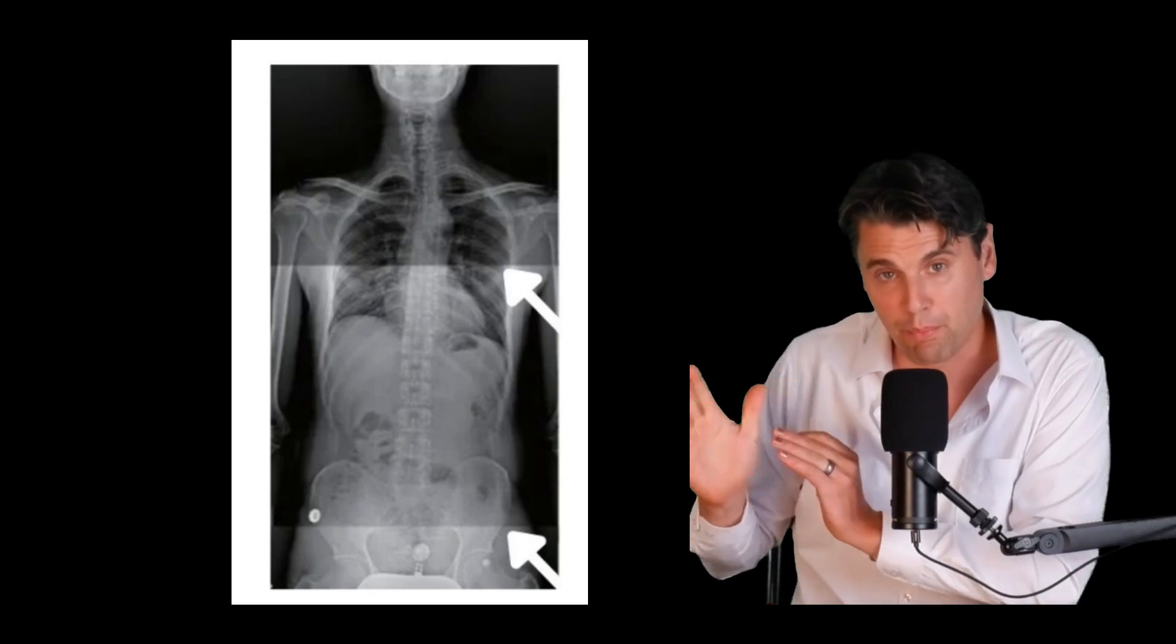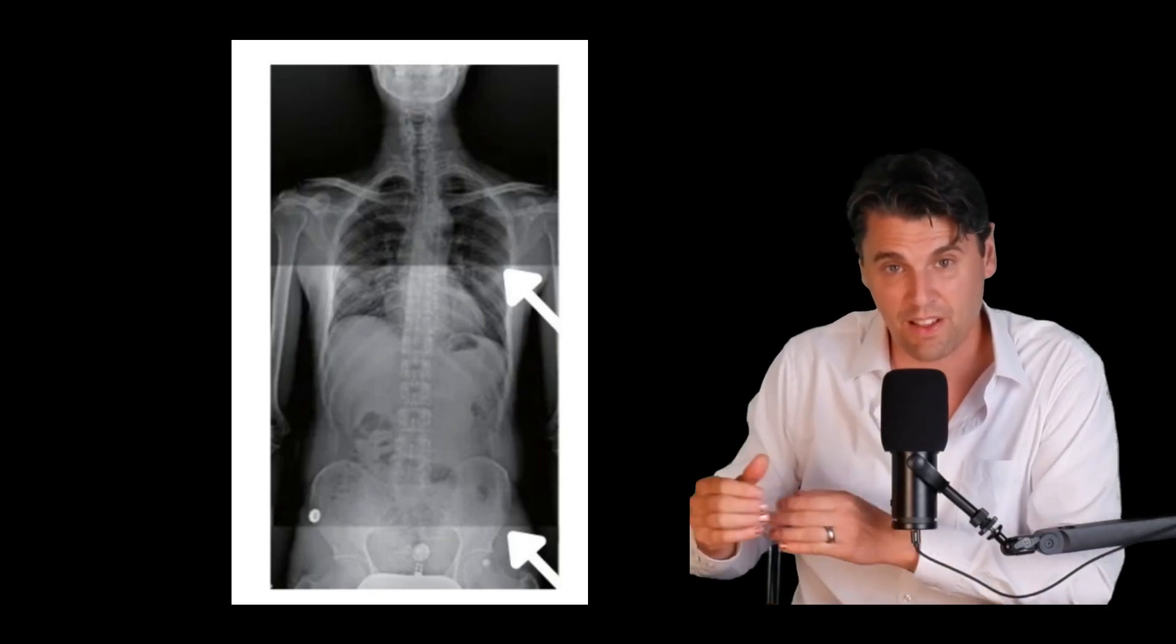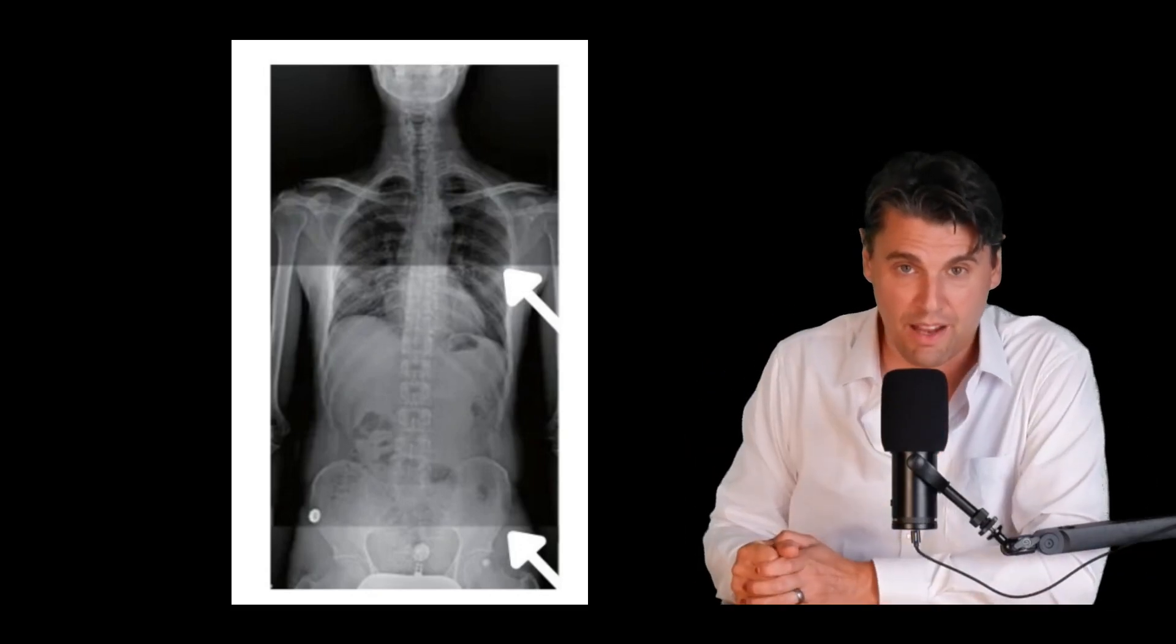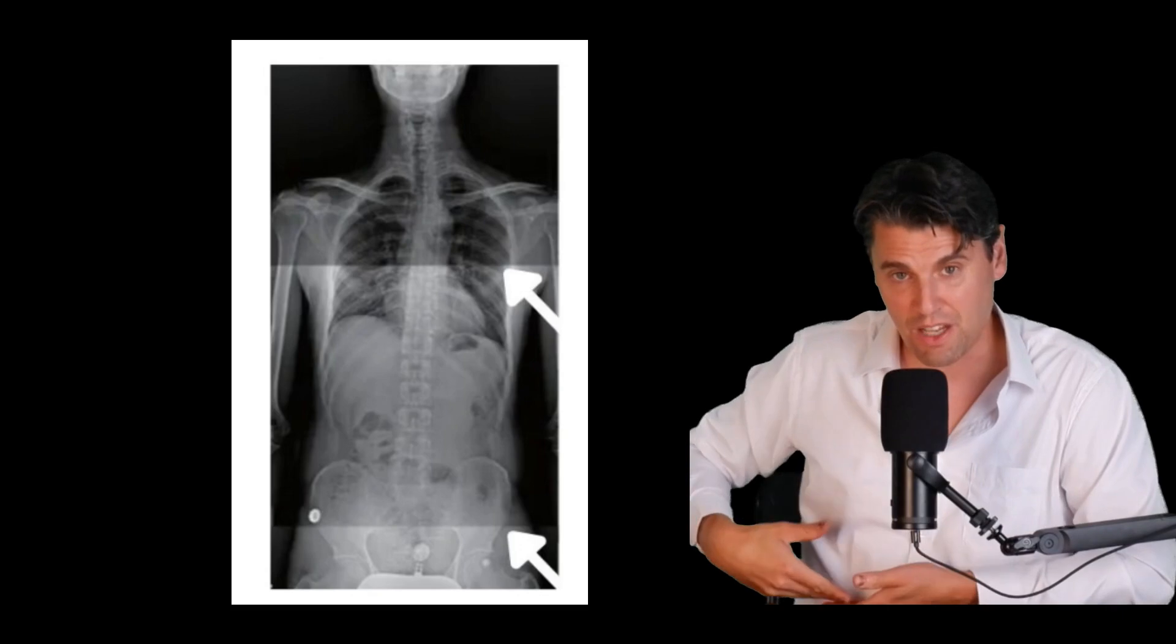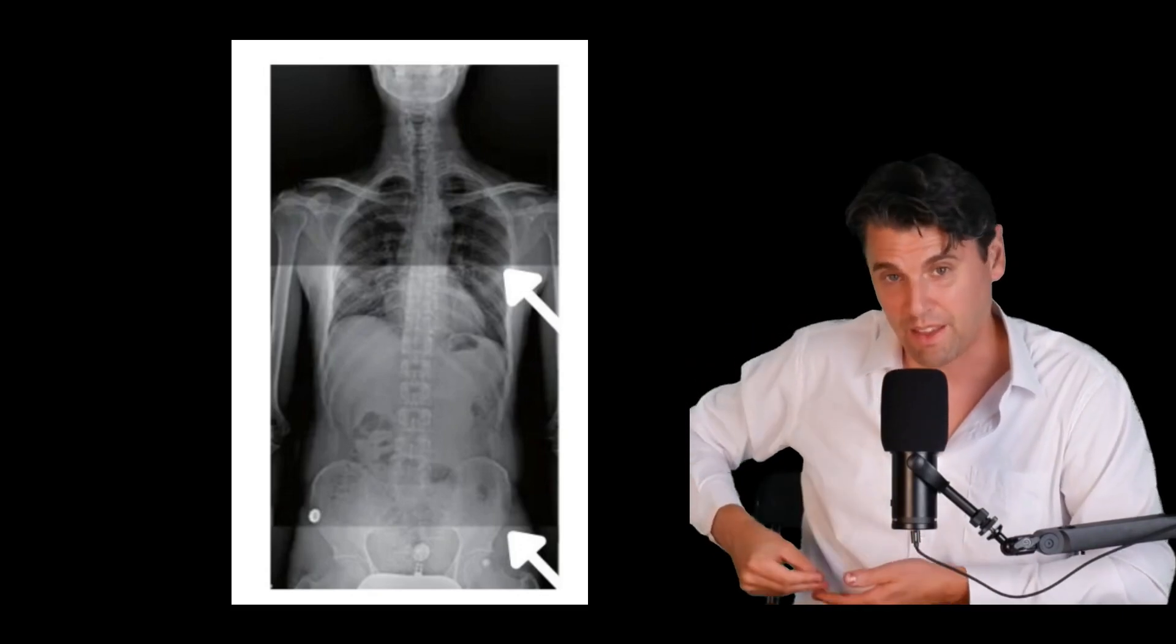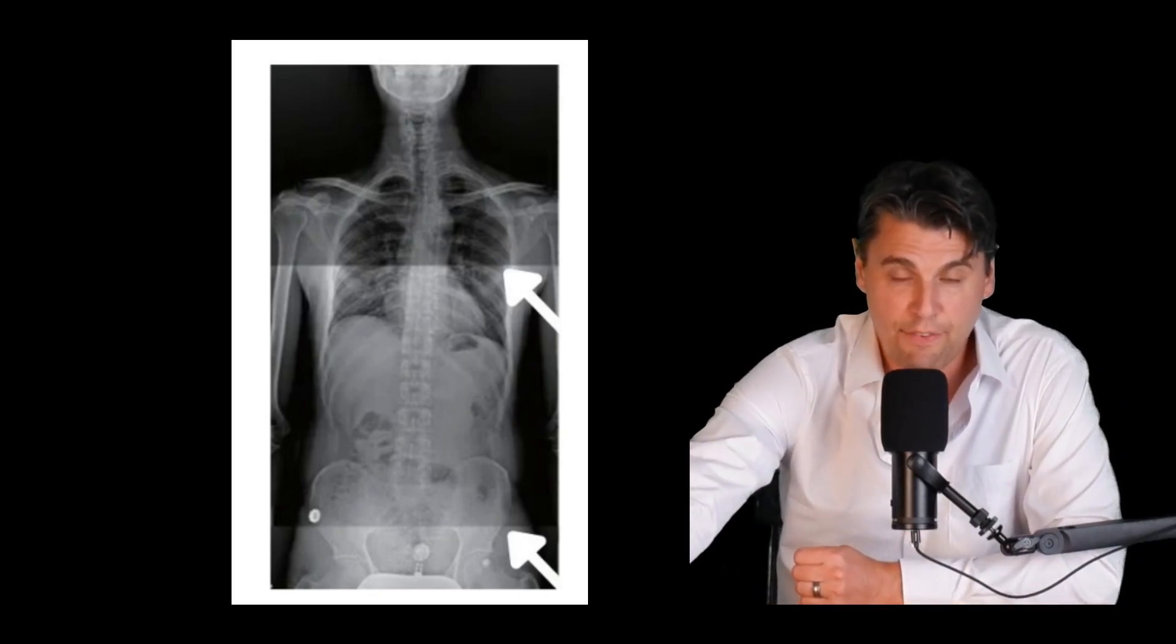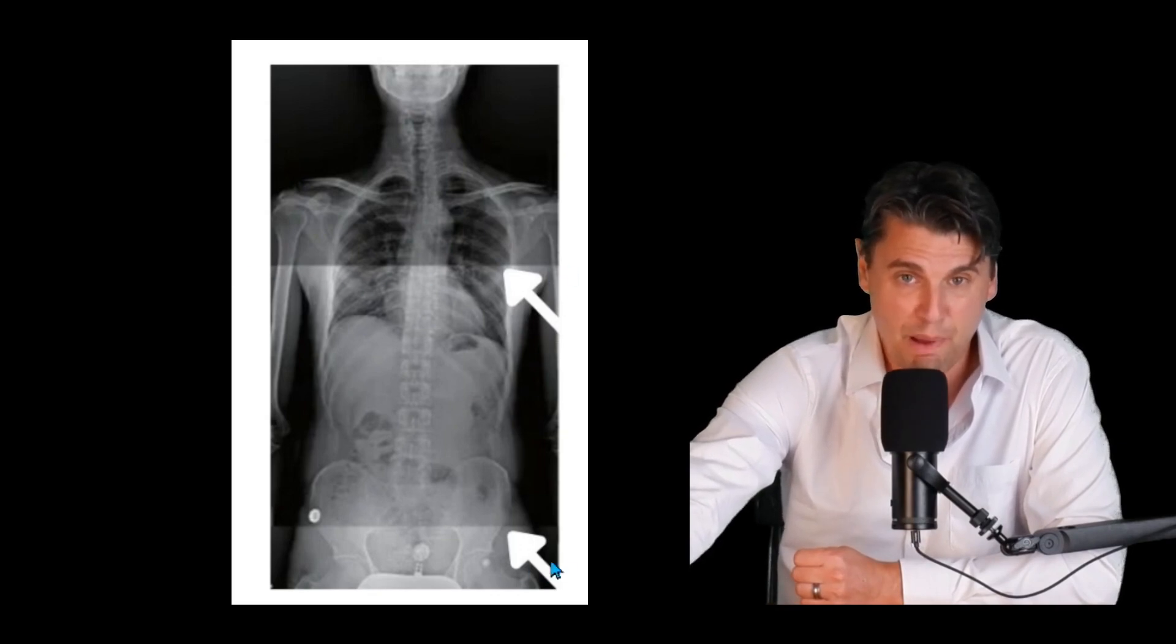We call that beam hardening and specifically the heel effect because you're actually going to have a different energy on either what we call the heel side or the non-heel side. These kinds of things can lead to differences in your attenuation such that you can see at the boundary there's a seam.